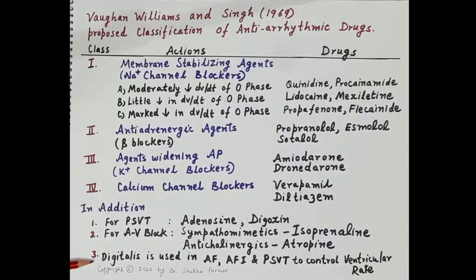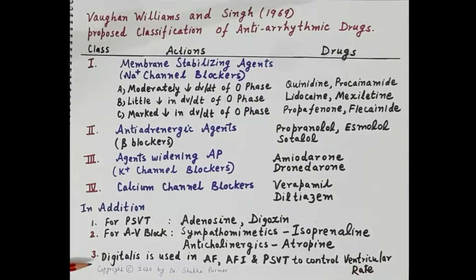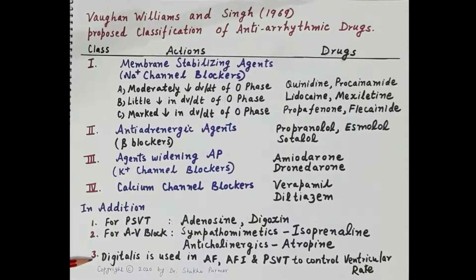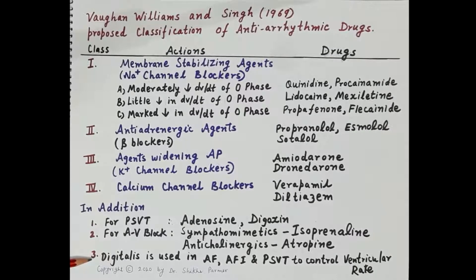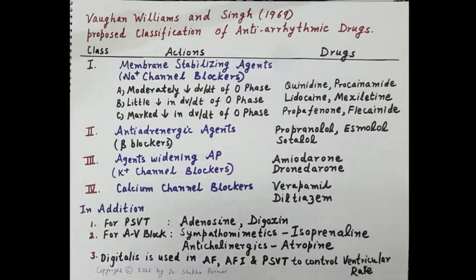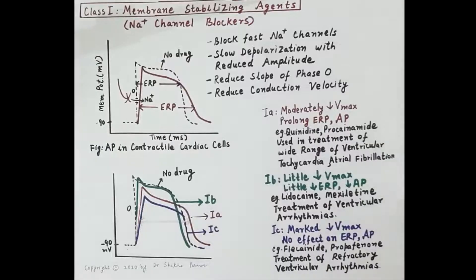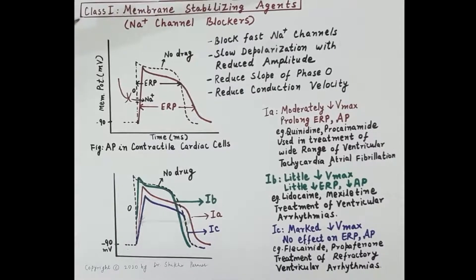Digitalis is used in the management of atrial flutter, atrial fibrillation, and paroxysmal supraventricular tachycardia to control the ventricular rate. Digitalis increases vagal nerve activity, reduces automaticity, reduces conduction speed, and reduces heart rate.